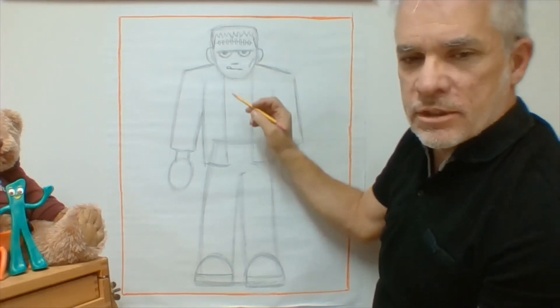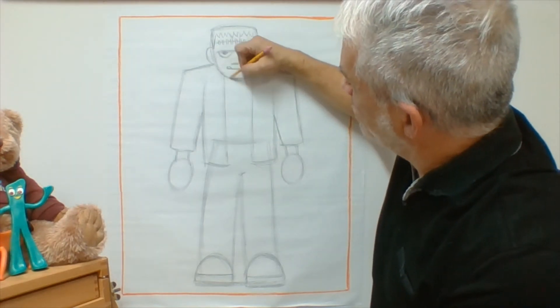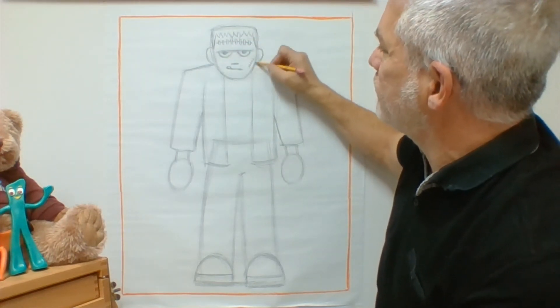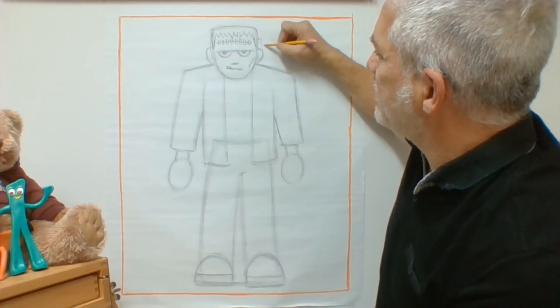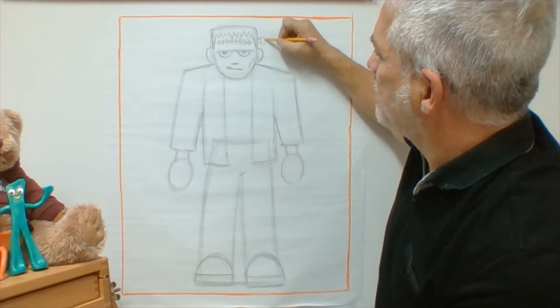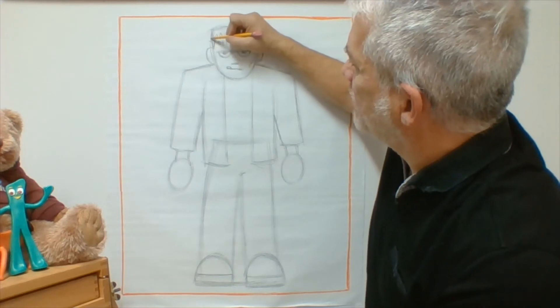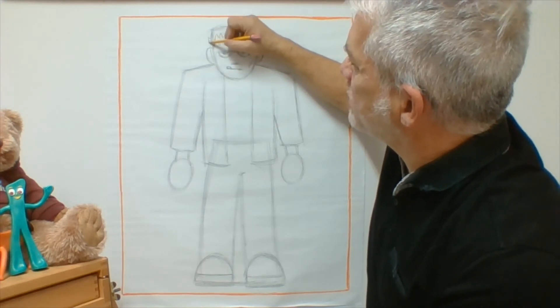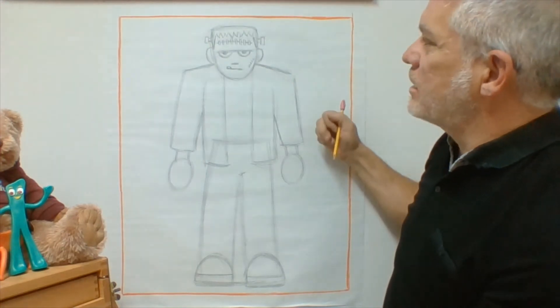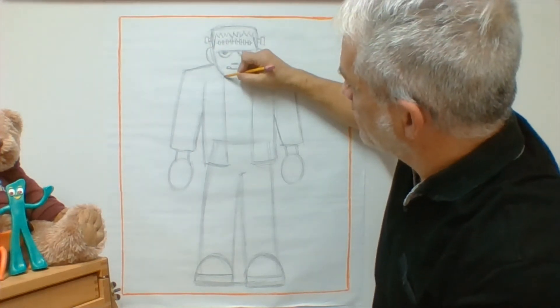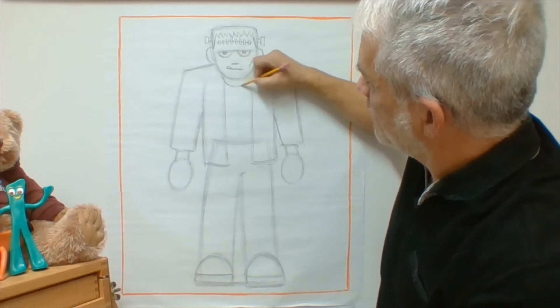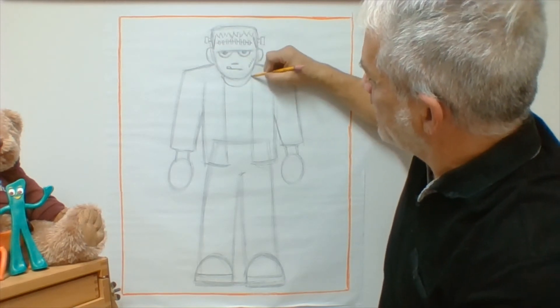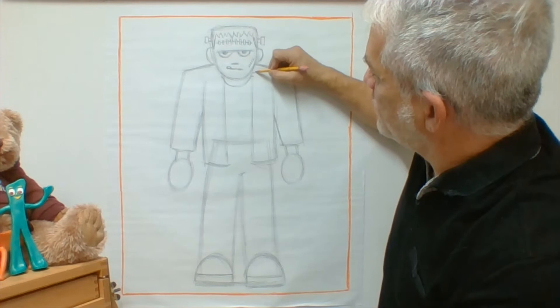For the bolts, the electric bolts that give him that little spark of life, we can either put them on the side of his head like this. I've seen some versions of Frankenstein's monster where those bolts on the side of his head. Or if you want to I can show a little bit of his neck and then put the bolts down here.